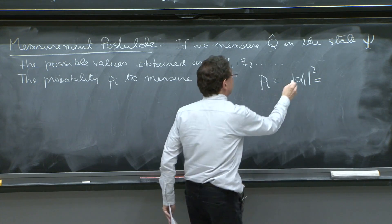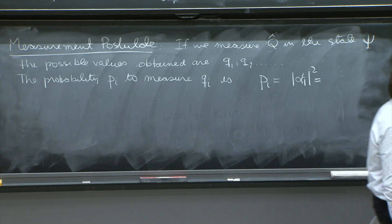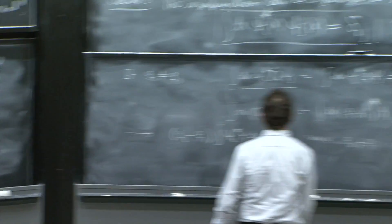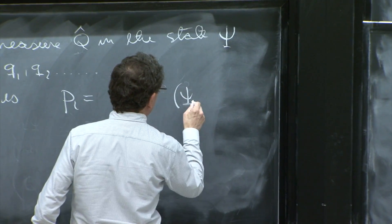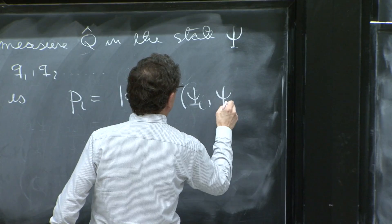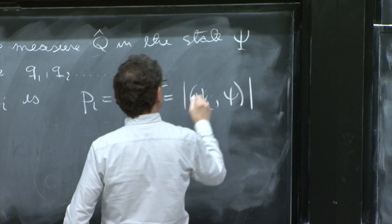The probability pi to measure qi is pi equals alpha i squared. And remember, what is alpha i? We calculated it. It is this overlap of psi i with psi squared.